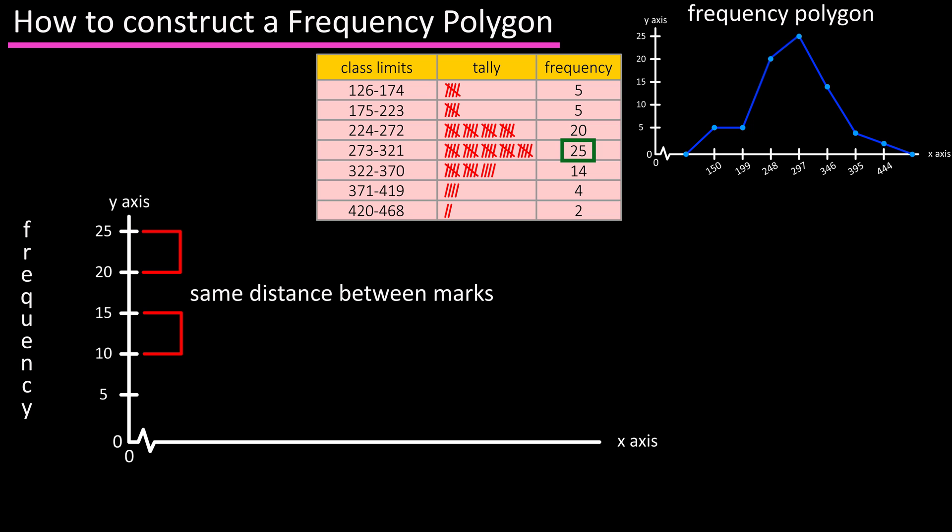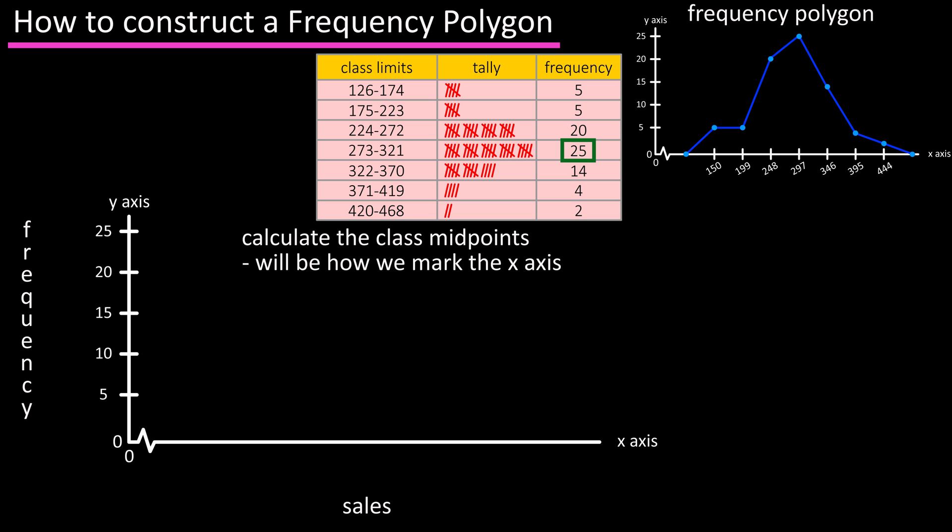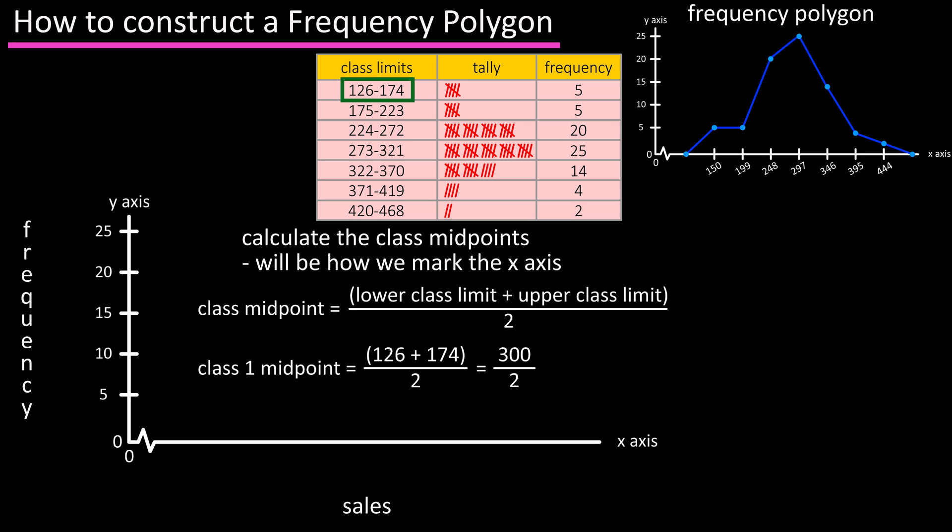The x-axis is going to represent whatever the data is. So let's say this data represents sales, but before we label the x-axis, we need to calculate the class midpoints for each of the classes. The formula for finding a midpoint of a class is the lower class limit plus the upper class limit, and take that result and divide by 2. So for class 1, the lower limit is 126, add that to the upper limit of 174, and we get 300. Take that and divide by 2, and we get 150 as the midpoint for class 1.